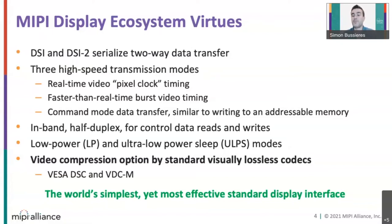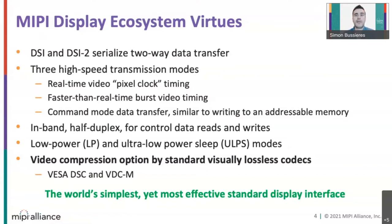To save even more power, DSI supports DSC and VDCM standard visually lossless compression codecs. The power saving comes from a lower link rate for a given resolution and frame rate, and a smaller frame buffer if one is present in the peripheral.